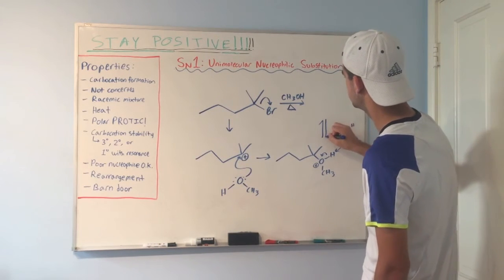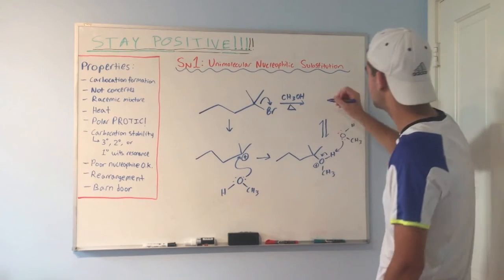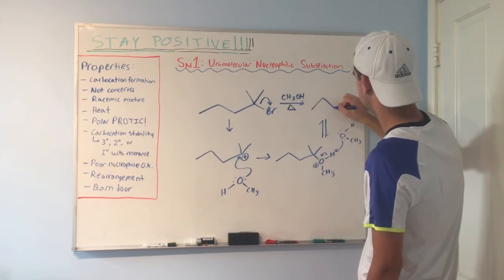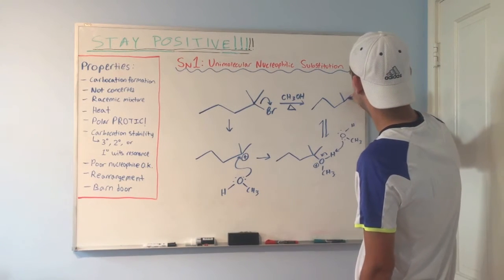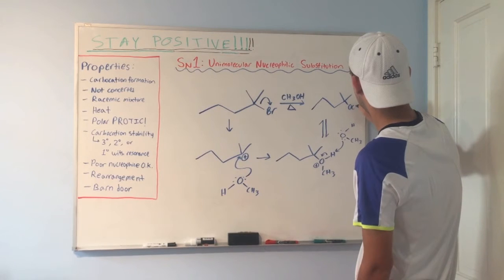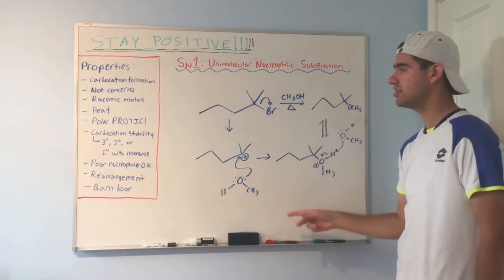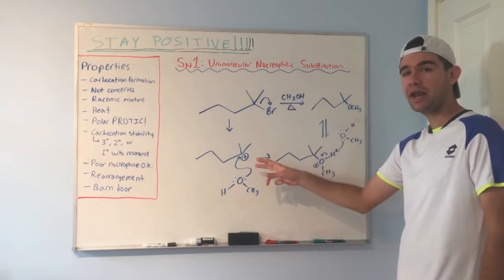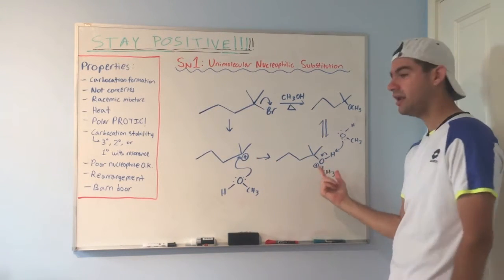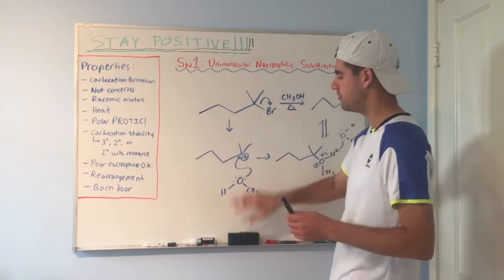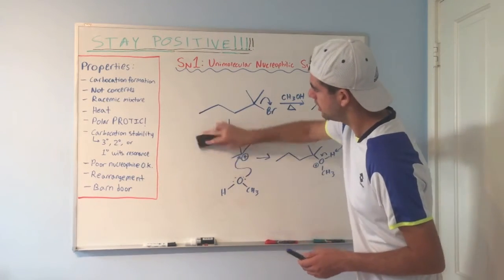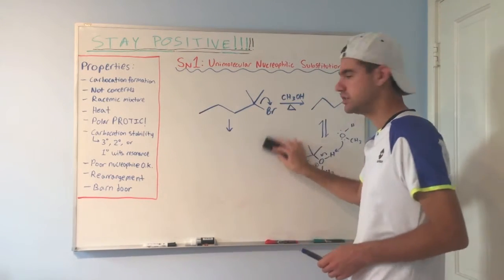Remember, double arrows for acid-base chemistry. So our final product looks like this. We follow all the steps. The leaving group left, carbocation formed, nucleophile attacked, and then deprotonation. Simple. This is like a very basic and fundamental example of SN1.